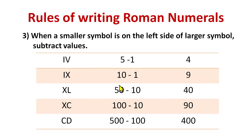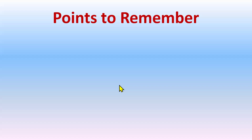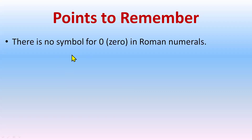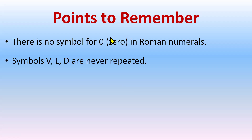So these are the three rules you need to remember. Now, points to remember: there is no symbol for 0 in Roman numerals. The symbols V, L, and D are never repeated — V is 5, L is 50, and D is 500. We can repeat I, C, and M, but V, L, and D we cannot repeat.